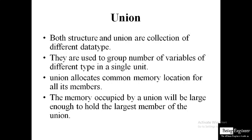Union allocates a common memory location for all its members. In a union, if we have int a, float b, and char c, in a structure the memory allocated is the sum of all members. For example, int takes 2 bytes, float takes 4 bytes, and char takes 1 byte, so the total memory for the structure would be 2 + 4 + 1 = 7 bytes.